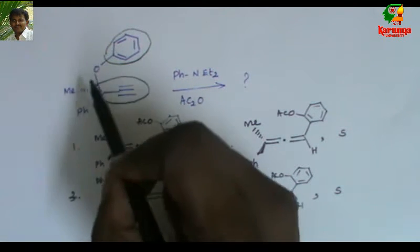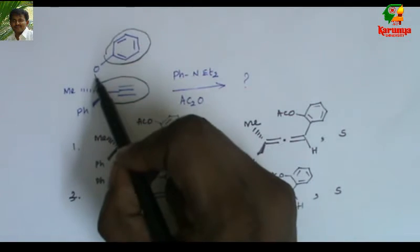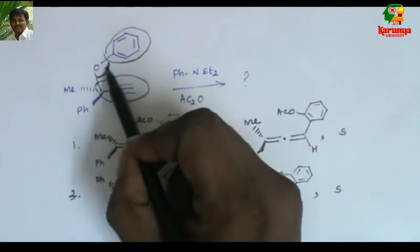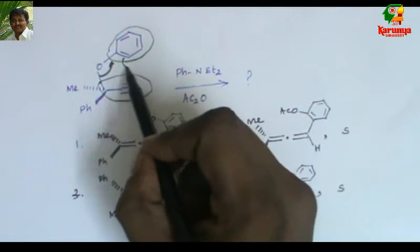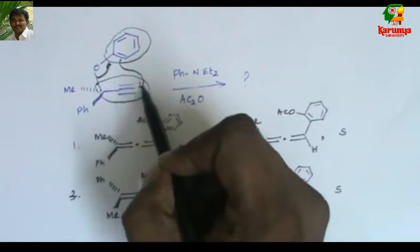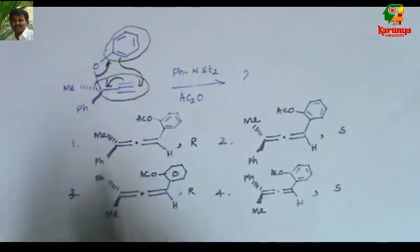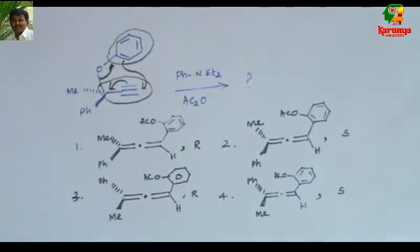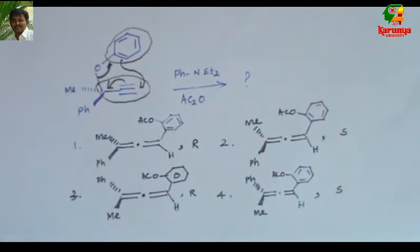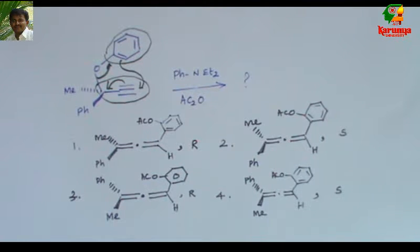So a bond — this bond will break and a new bond will form here, and one of these bonds will migrate to give allene. Now what will be the product and what will be the stereochemistry of the product?